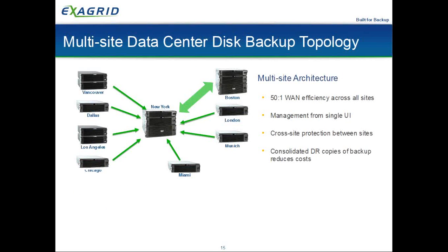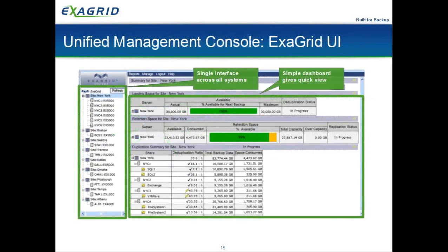For replication, we support multi-site topologies — hub and spoke — with unidirectional or bidirectional replication. Regardless of how many sites you have, they can all be managed from a single user interface. All ExaGrid appliances, whether in a single node or in a grid, communicate with each other. You could be sitting in New York managing data for Miami or Vancouver. The user interface is browser-based — no software or agents to install.